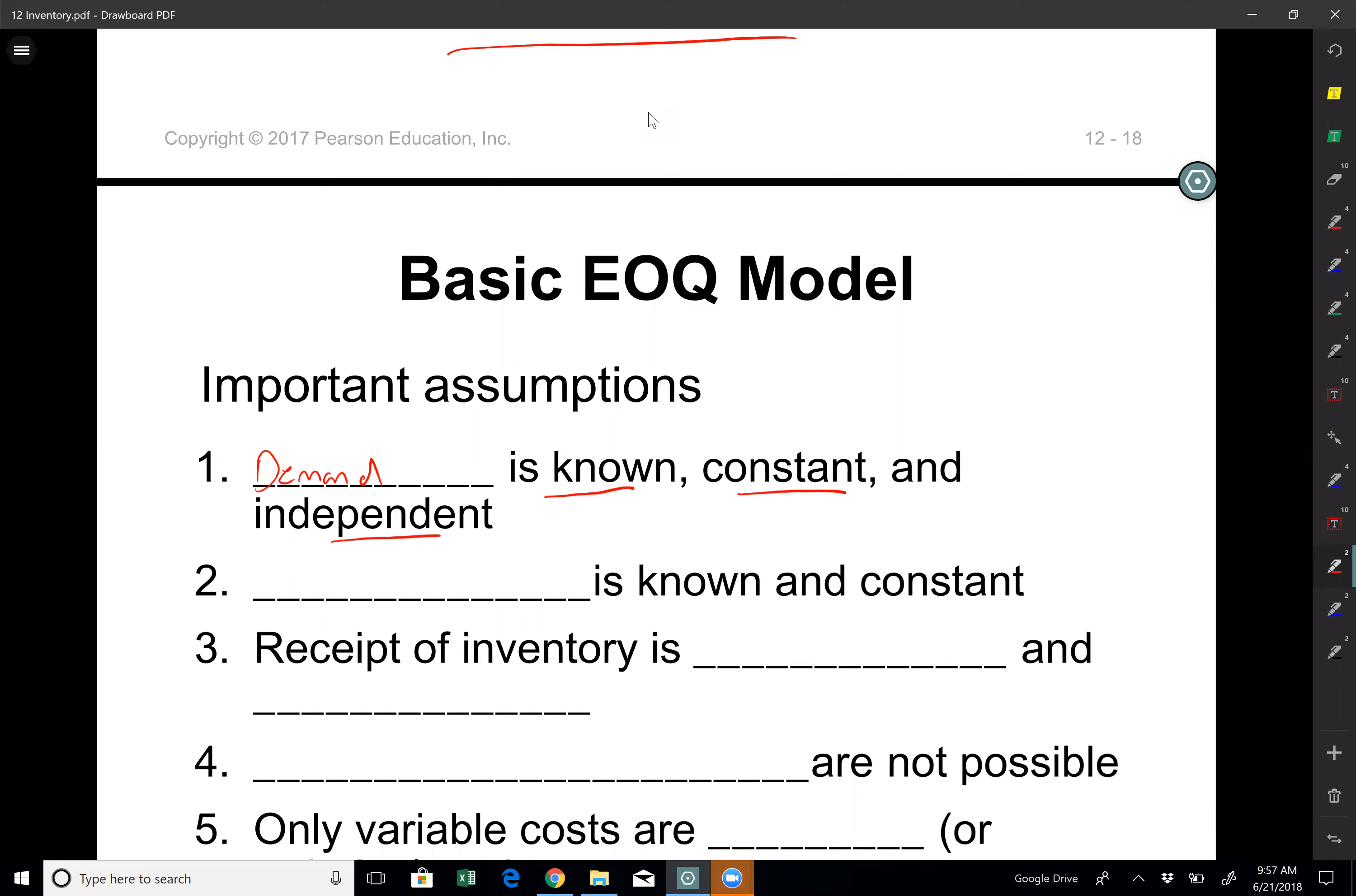We may know the behavior of demand based on historical data but we cannot really know exactly what the demand is gonna be unless it is a pre-assigned or pre-accepted business deal like a governmental contract and so on.